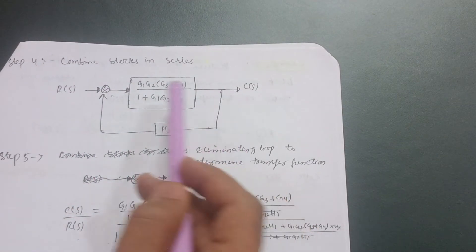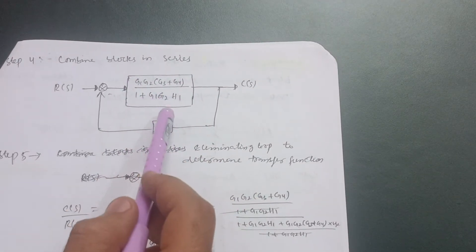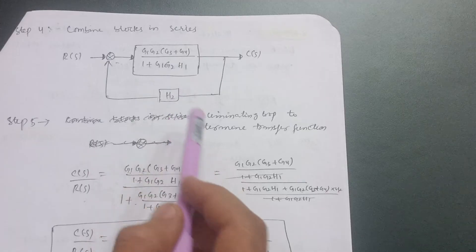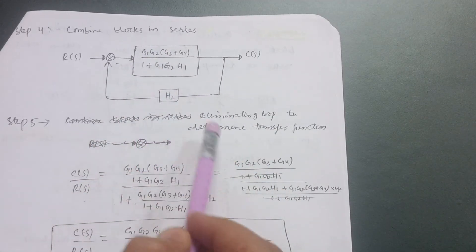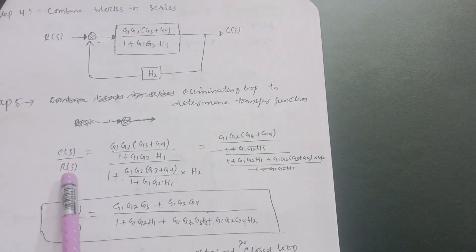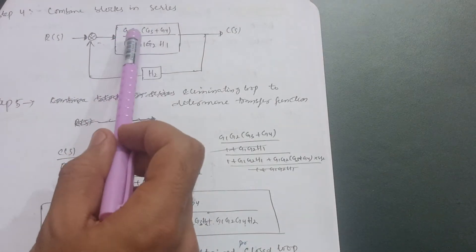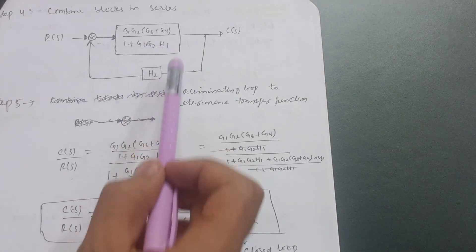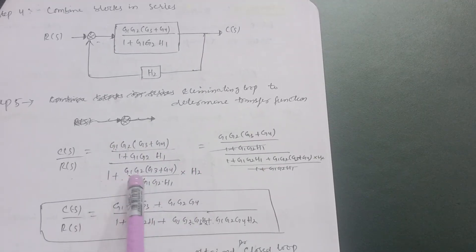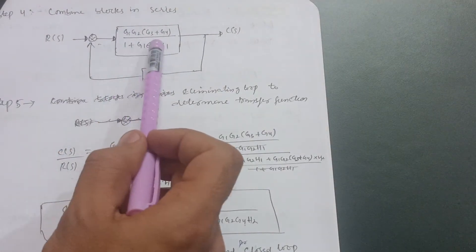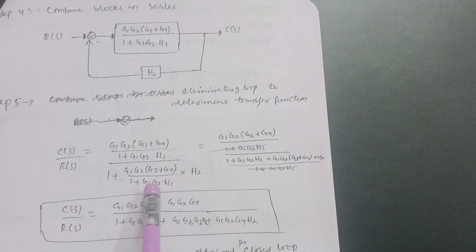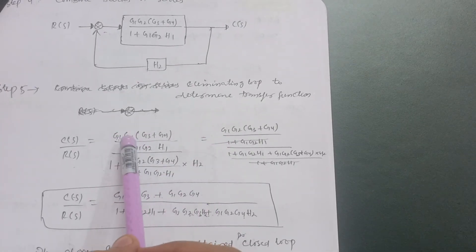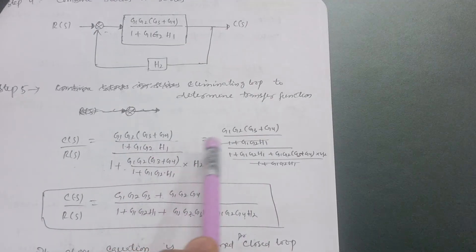In step five, I am getting one summing point, one takeoff point, one forward path, and one feedback path — this is again a canonical form. Eliminating this minor loop, the transfer function C(s)/R(s) equals G(s) divided by (1 + G(s)H(s)). Here G(s) is G1G2(G3+G4)/(1+G1G2·H1), and H(s) is H2. So we write G1G2(G3+G4)/(1+G1G2·H1) all over 1 plus that same term multiplied by H2.